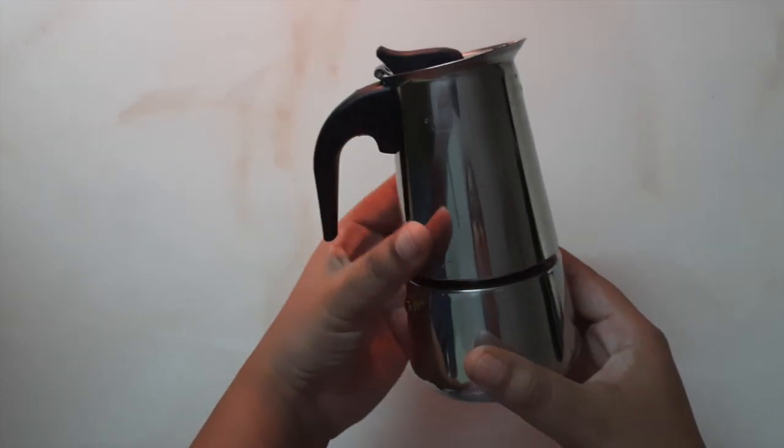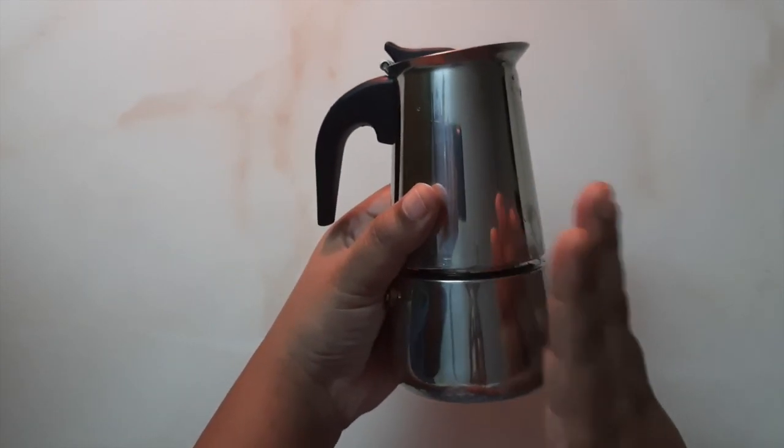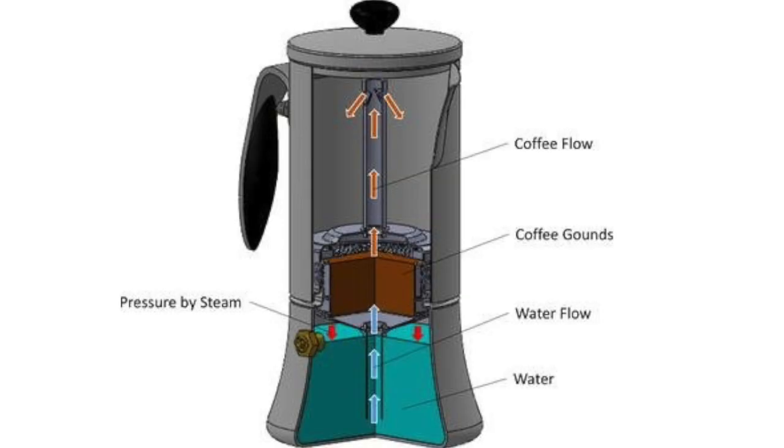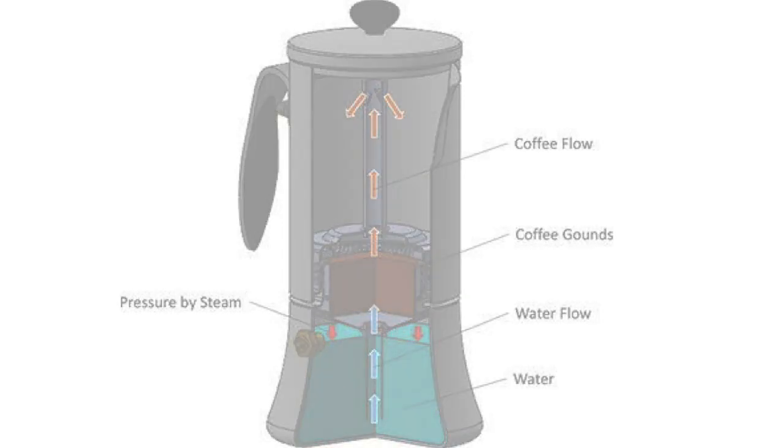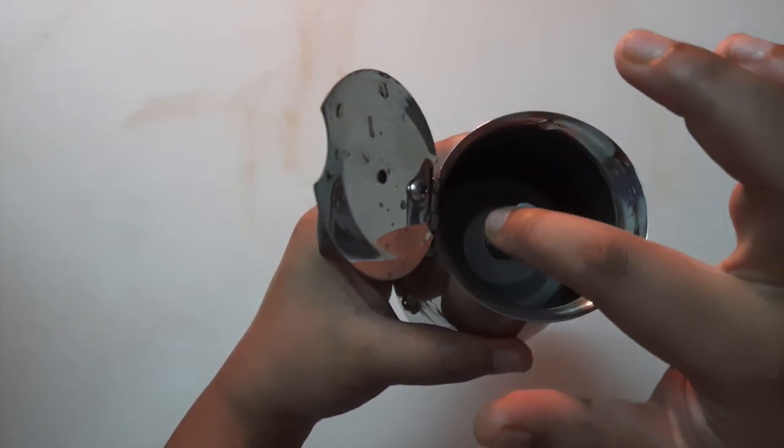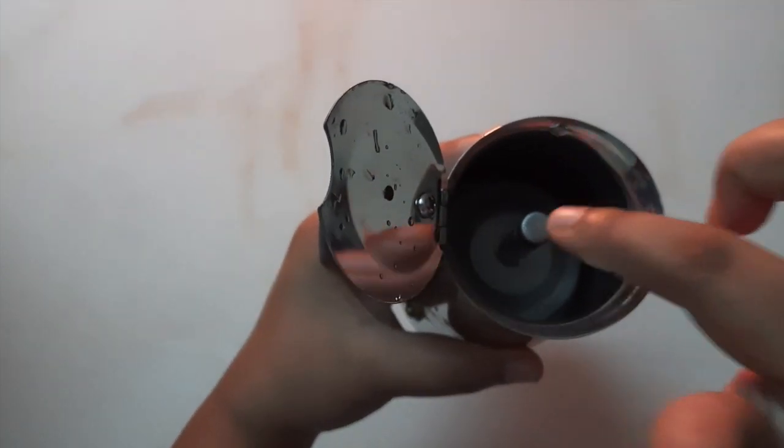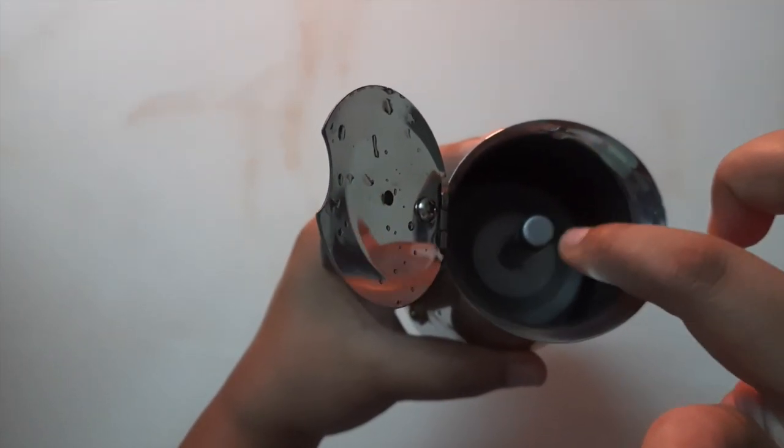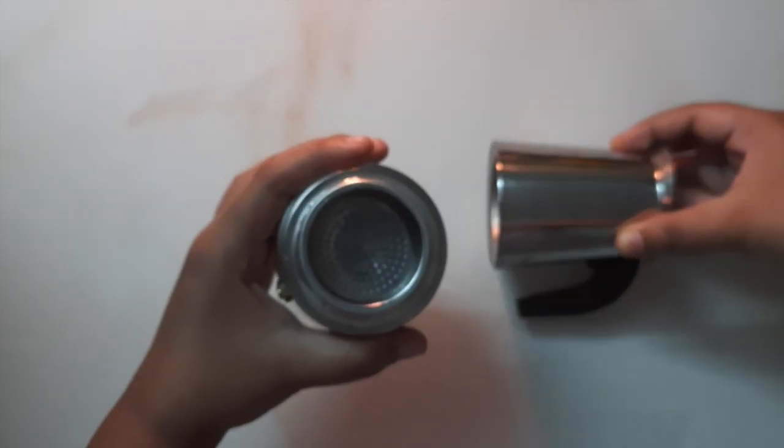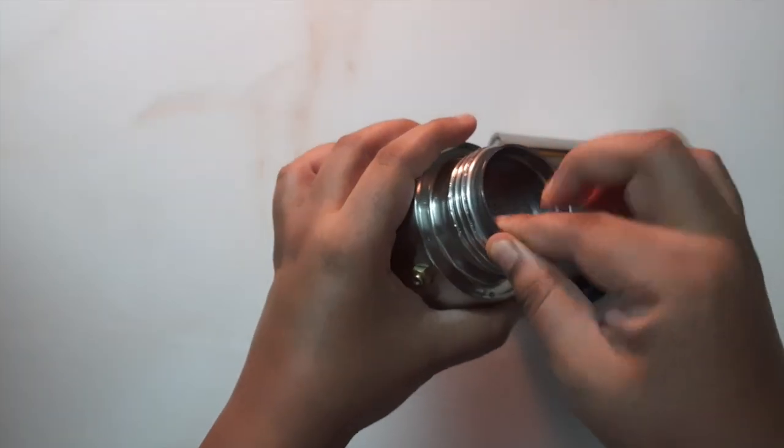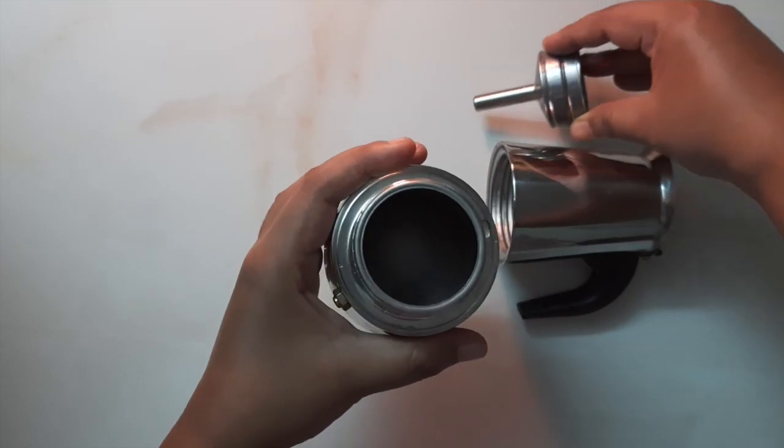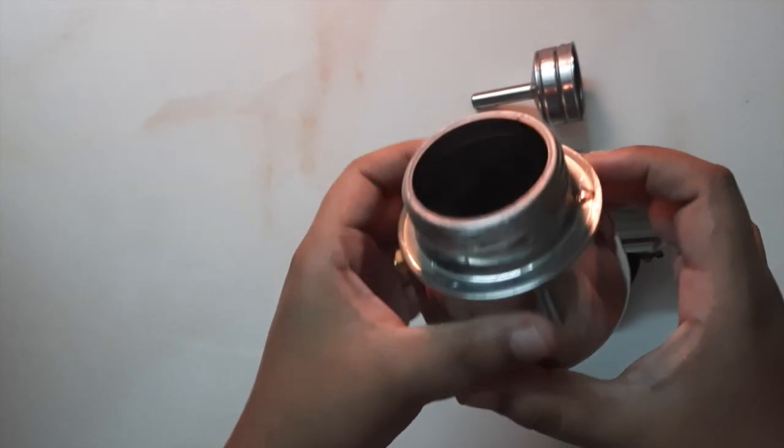This consists of three parts. Let me show you quickly. There are two holes here on this pipe - this is the place from where the coffee percolates. Next, this is the second part, the filter, where we fill the coffee. And the third part is where we fill water.